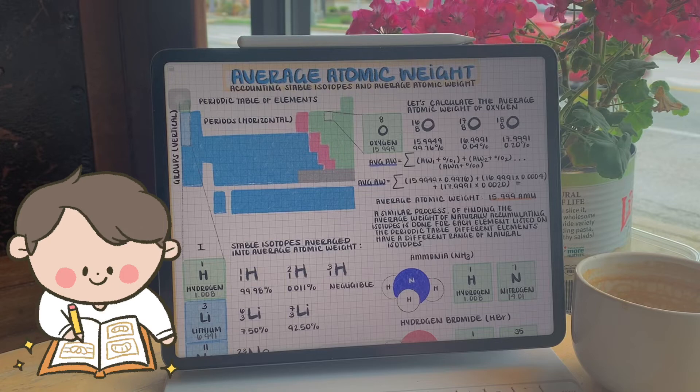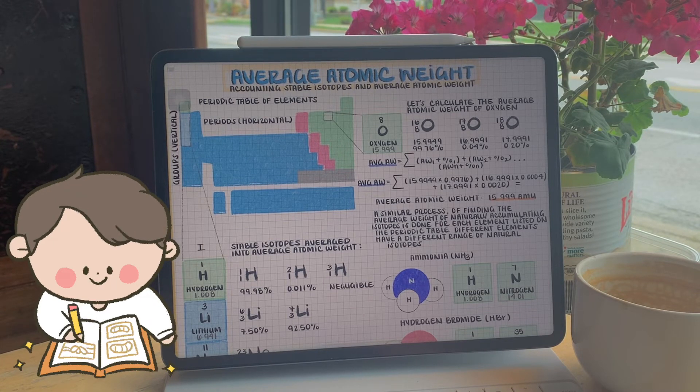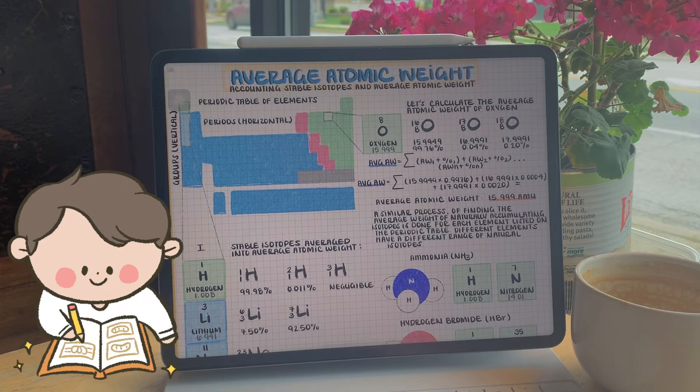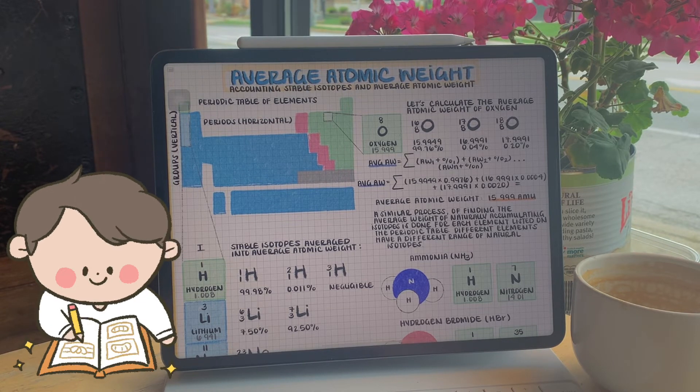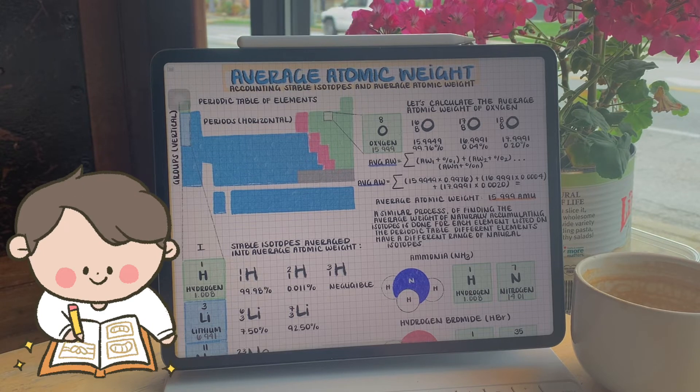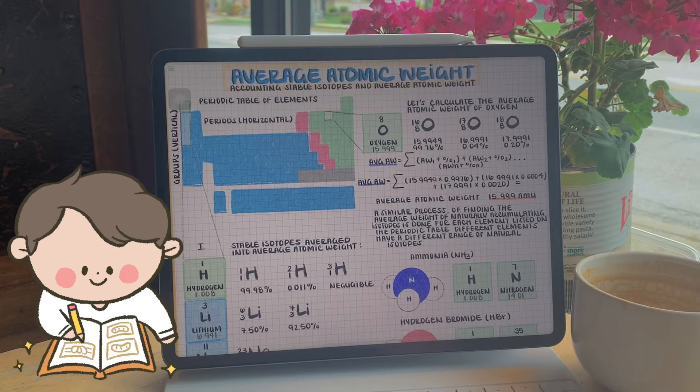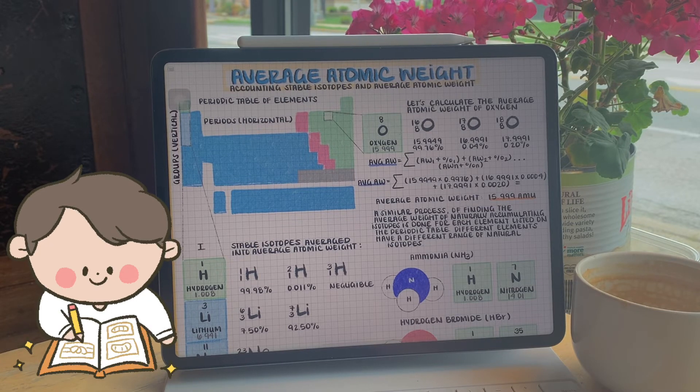The atomic weight of elements listed on the periodic table is not of the most common isotope, but is an average based off the natural abundance of all naturally abundant isotopes of that specific element, to ensure we take into account the percentage of lighter or heavier isotopes in any given sample.